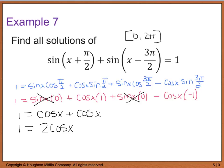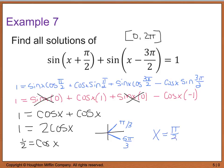Solving this, we get 1 half equals cosine of x. Thinking back to our unit circle, there are two places between 0 and 2pi where cosine x equals 1 half — that occurs in quadrant 1 and quadrant 4. The quadrant 1 value is pi over 3 and the quadrant 4 value is 5pi over 3, so x equals pi over 3 and 5pi over 3 are our two solutions.